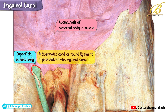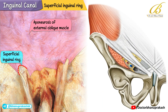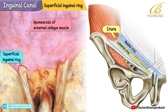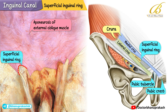Through this opening, important structures like the spermatic cord or round ligament pass out of the inguinal canal. The sides of this opening are formed by two bands of the external oblique aponeurosis called the crura. The lateral crus attaches to the pubic tubercle, and the medial crus inserts onto the pubic crest. Together they frame the superficial inguinal ring.